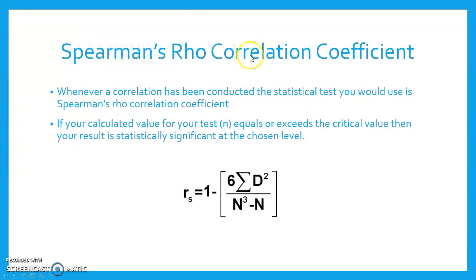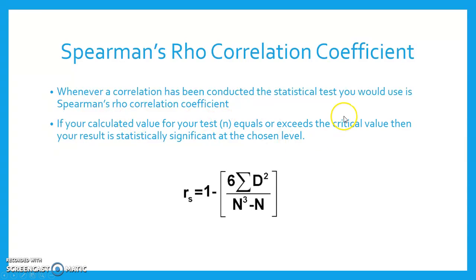Finally, we're going to look at Spearman's Rho correlation coefficient, which is always used when there is a correlation. If your calculated value for your test, n, equals or exceeds the critical value, then your result is statistically significant at the chosen level. You'll probably be given the calculated value in your exam, and you'll be given a list of critical values, and you'll just need to remember that if it equals or exceeds the critical value, then it is significant at that level.